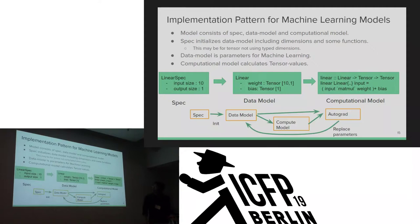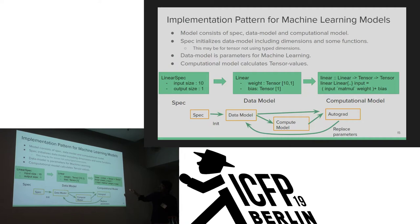Next, I'll show the implementation pattern of a machine learning model. The model consists of three parts: Spec, Data Model, and Computational Model. Spec initializes the data model, including dimensions and some functions. The data model holds the parameters for machine learning. The computational model calculates tensor values. At first, Spec initializes the Data Model; the Computational Model generates tensor values using the Data Model; then Autograd calculates new parameters and updates the Data Model.